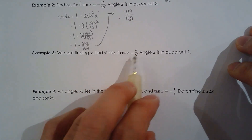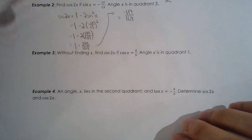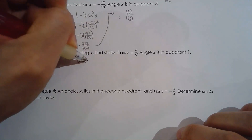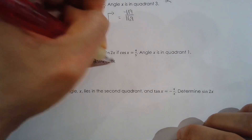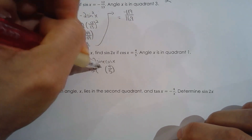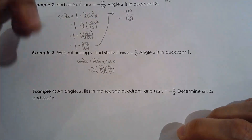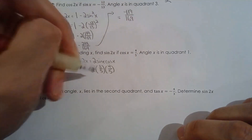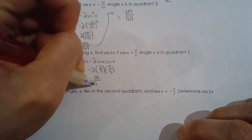Find sin(2x) without finding x, given cosx = 4/5 in quadrant 1. Using sin(2x) = 2sinx·cosx. Recognizing the 3-4-5 Pythagorean triple, sinx = 3/5 since x is in quadrant 1. Therefore sin(2x) = 2 · (3/5) · (4/5) = 24/25.